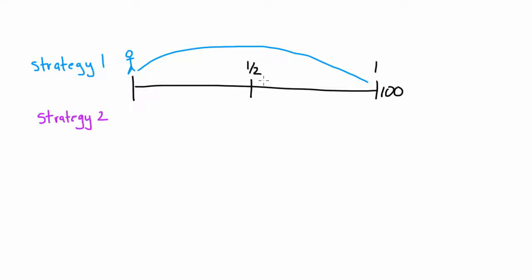Another strategy to get $100 in one year is to invest in a six-month bond today — we'd be paying something today. We invest in that six-month bond and then we get a payoff here in six months. If we take that payoff and reinvest it in another six-month bond, we can structure that initial purchase such that we will receive $100 in one year.